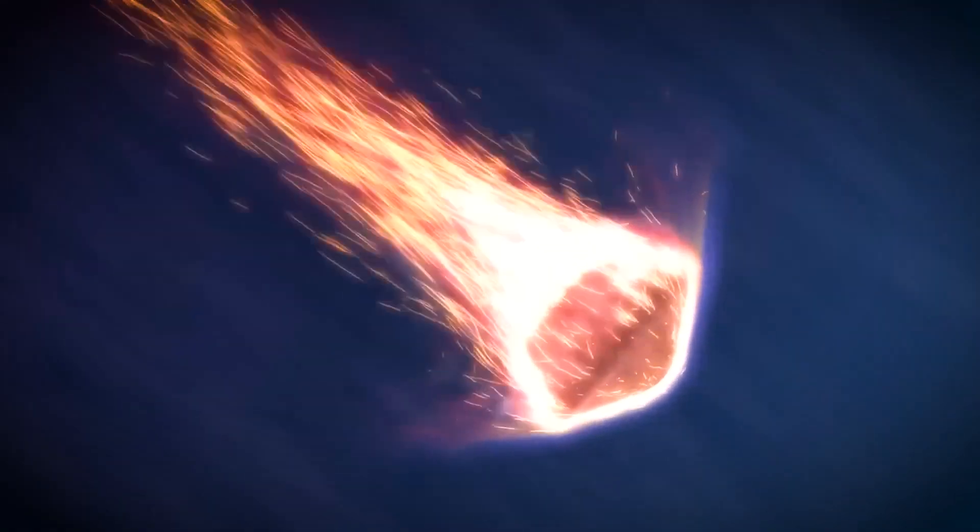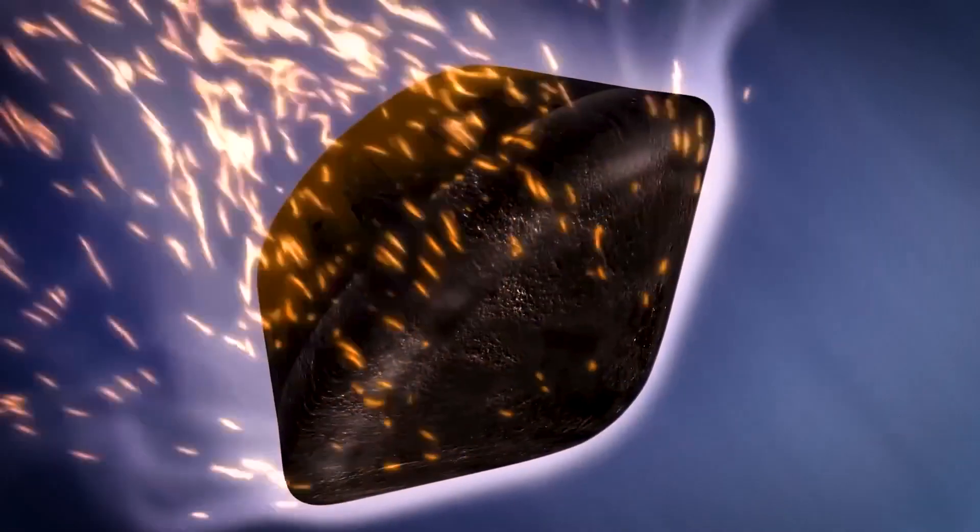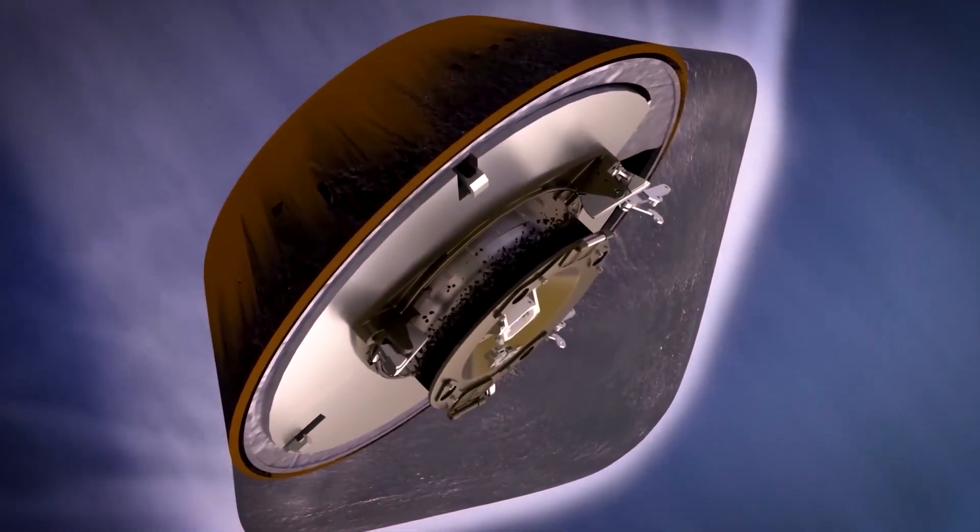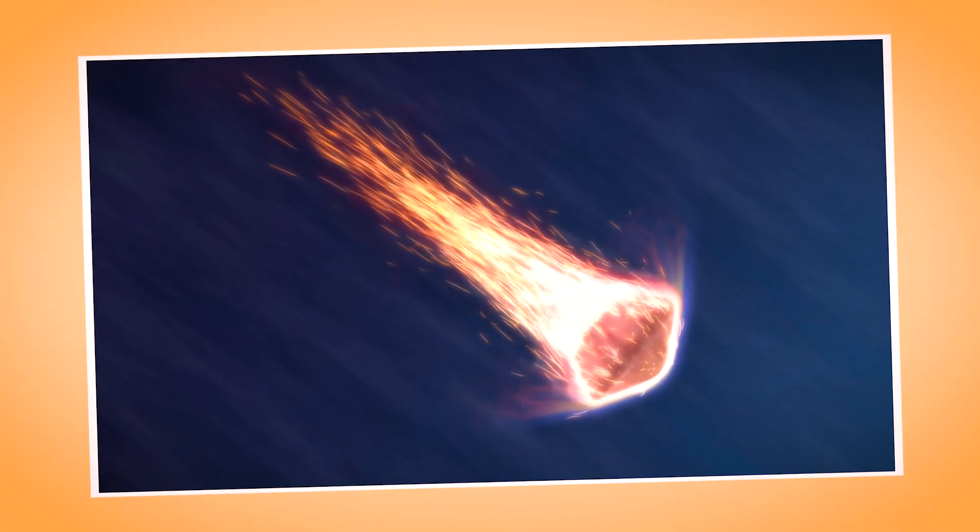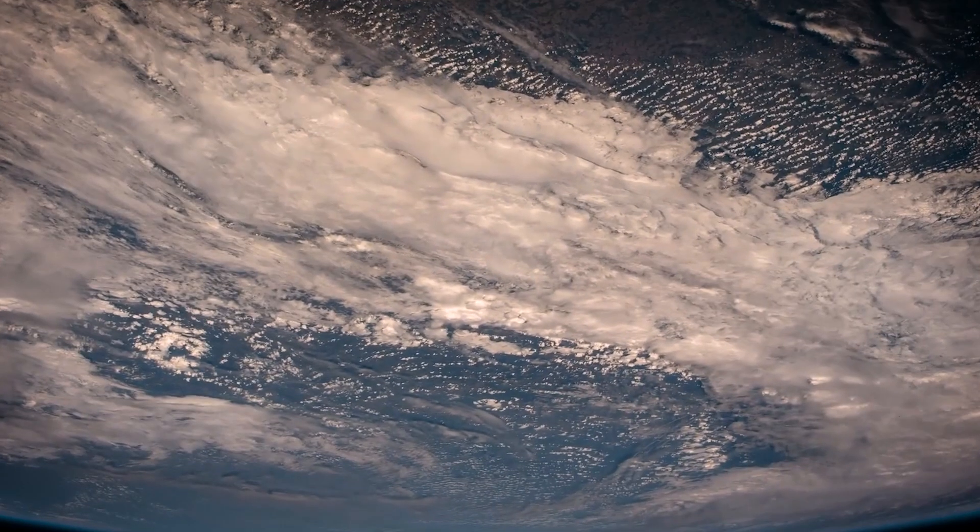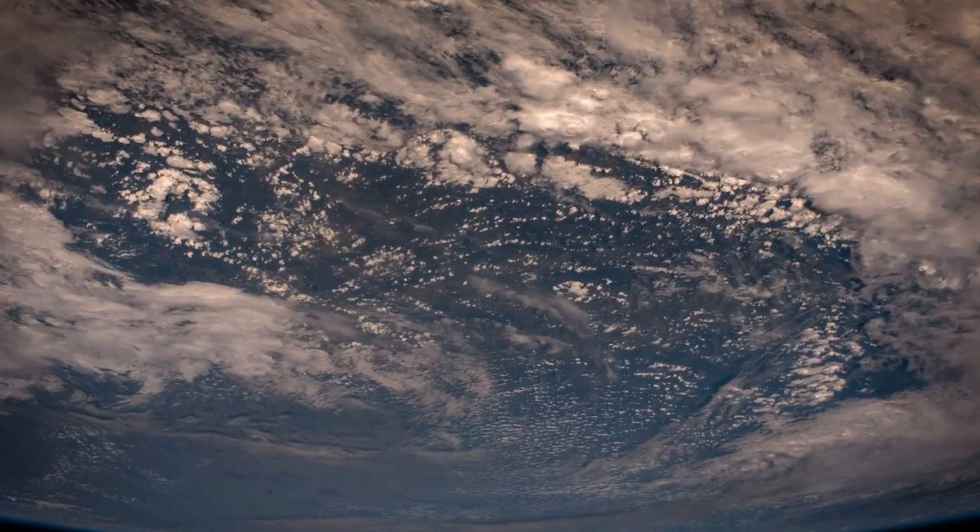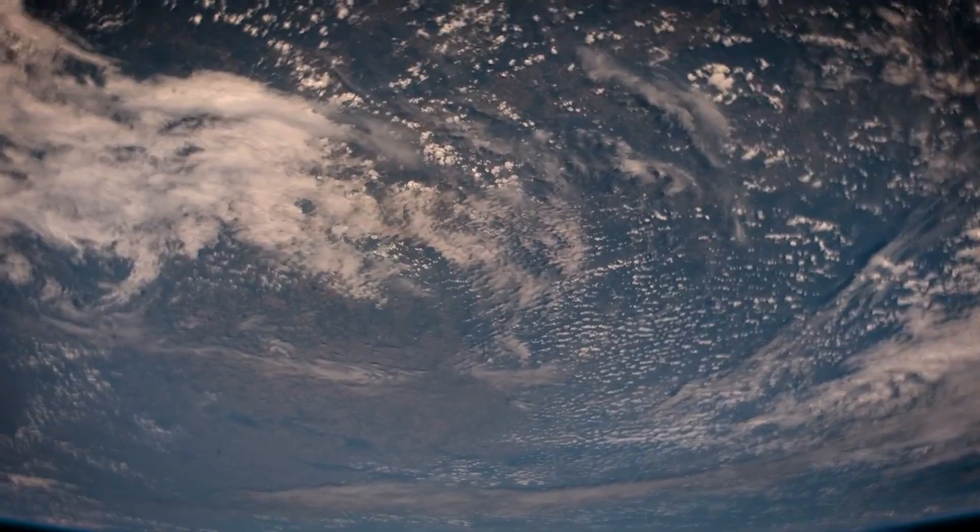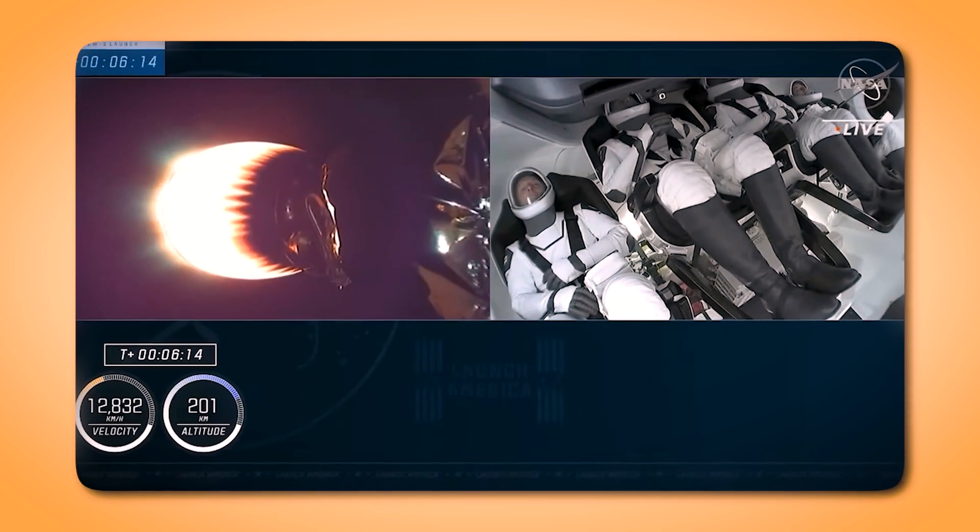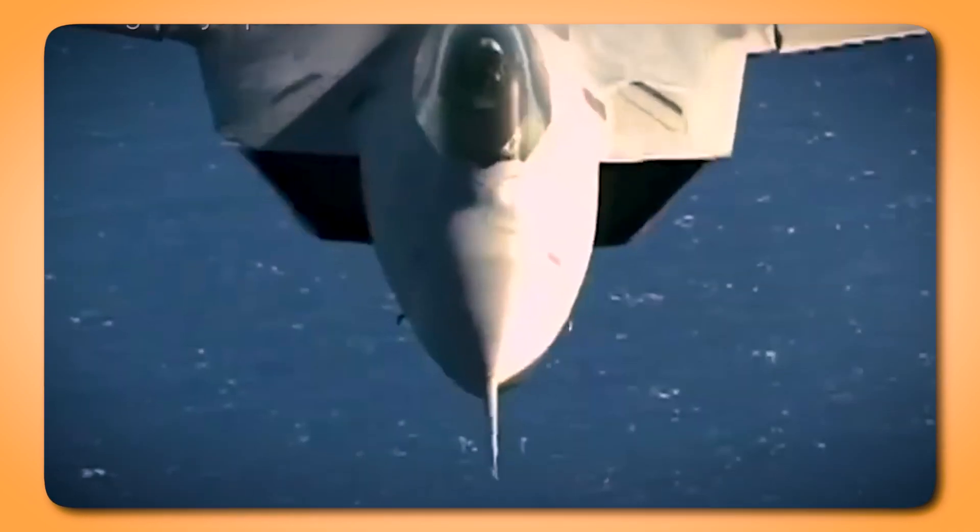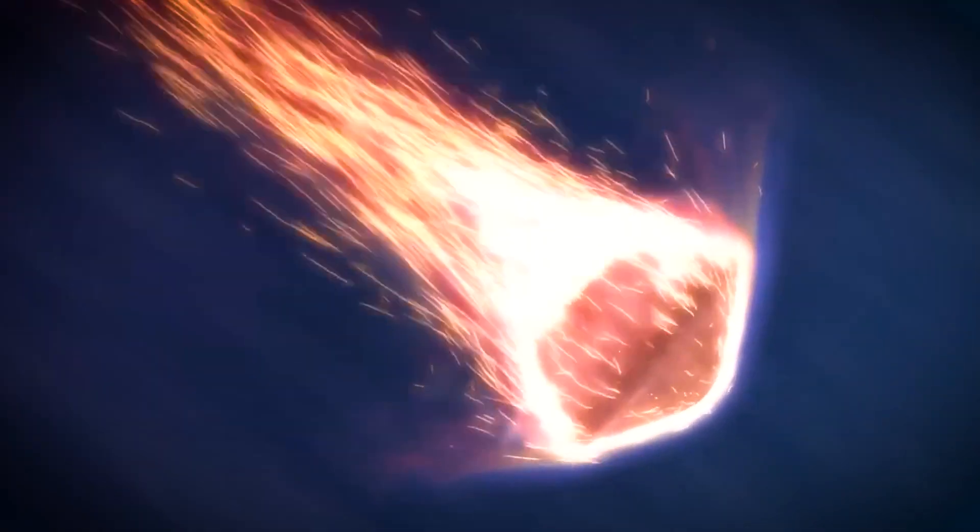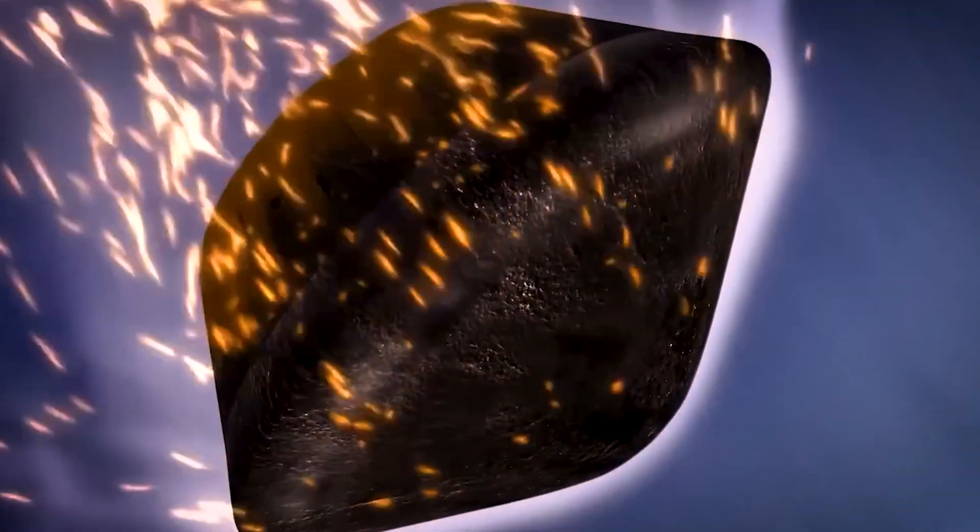The capsule entered Earth's atmosphere at an astonishing speed of 43,000 kilometers per hour, making it the second fastest human-made object to do so, just 3,000 kilometers per hour slower than NASA's Stardust capsule. It endured an incredible 32 g-forces during re-entry, which is 32 times the acceleration due to Earth's gravity. For comparison, standing on Earth subjects you to 1 g, and most people lose consciousness at 4 to 5 g's. Today's astronauts experience about 3 g's during launch, while trained fighter pilots can tolerate up to 8 to 9 g's for brief periods, aided by specialized suits. The 32 g's sustained by the return capsule are almost unimaginable, a testament to its extraordinary engineering.